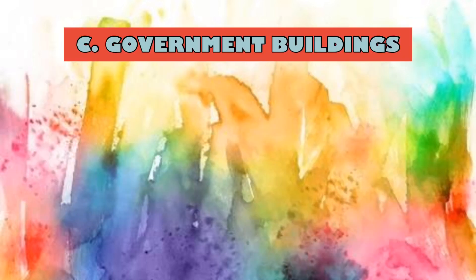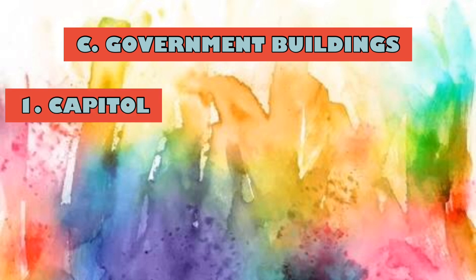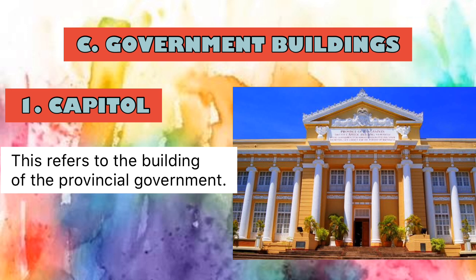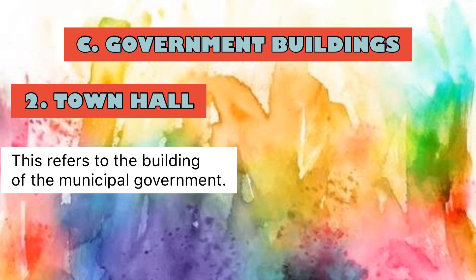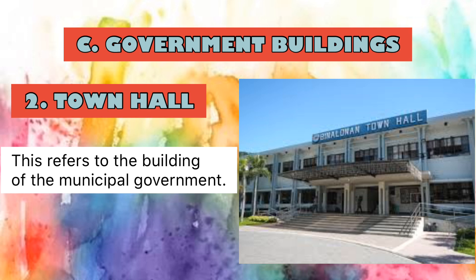Next form of architecture: government buildings. First is the capitol or capitolio, which refers to the building of the provincial government. Most capitolios in the country use columns and pediments. Another is the town hall or municipio, the building of the municipal government. The offices of the mayor, the municipal council, the municipal court, jail, and other important offices such as the municipal registrar's office are located here.